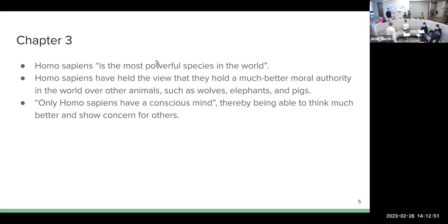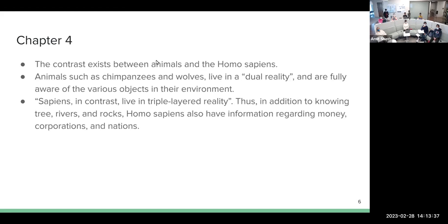So Homo sapiens, again it's the humans, the wise humans, is the most powerful species in the world. It has more authority over animals and they even have a conscious mind. So they can think better, they can make better decisions. And this chapter mainly just goes on and on about having the intelligence and how we are more powerful given the fact that we can handle or use our intelligence in a way that these animals cannot. So that's a major point of distinction between humans and other animals. Even they have like eyes, nose, ears, brain, everything, but still they don't have that kind of intelligence.